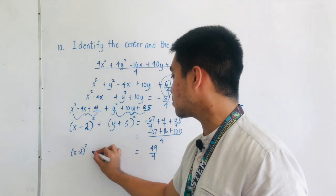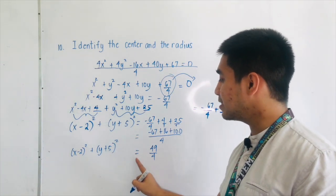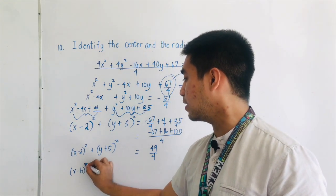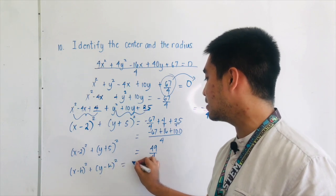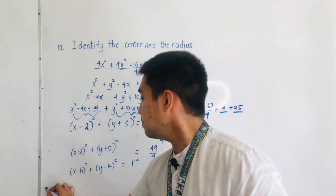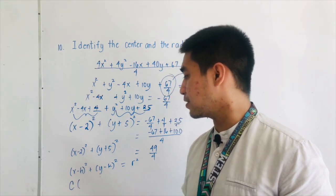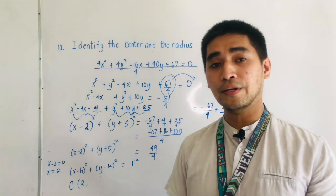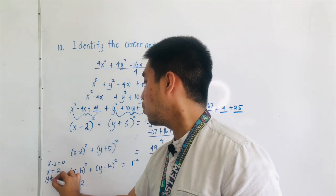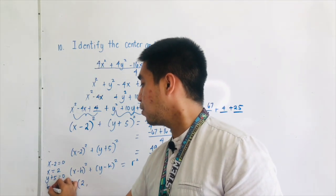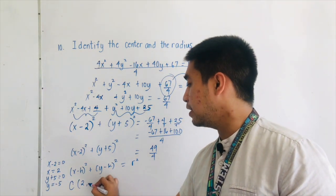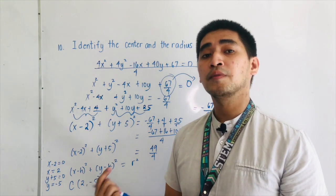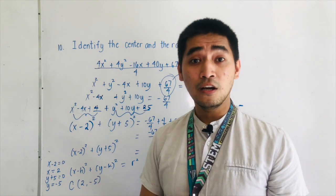We now have x minus 2, quantity squared, plus y plus 5, quantity squared, equals 49 over 4. Recalling the center-radius form — x minus h squared plus y minus k squared equals r squared — to get the center: x minus 2 equals 0 gives x equals 2; y plus 5 equals 0 gives y equals negative 5. The shortcut is to take the opposite sign: opposite of negative 2 is positive 2, opposite of positive 5 is negative 5. So the center is (2, negative 5).